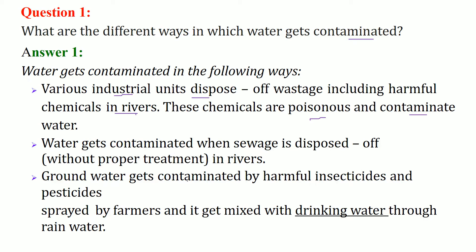Then there is sewage from the cities. Water gets contaminated when sewage is disposed of without any proper treatment into the rivers. Also, when we apply insecticides and pesticides to crops, due to rain they seep into the groundwater, and then we drink this water. This is how water gets contaminated.